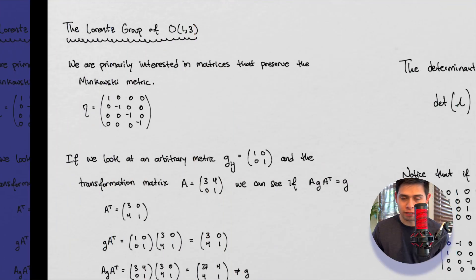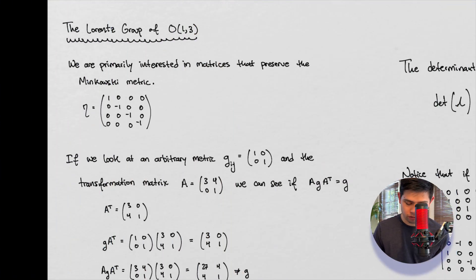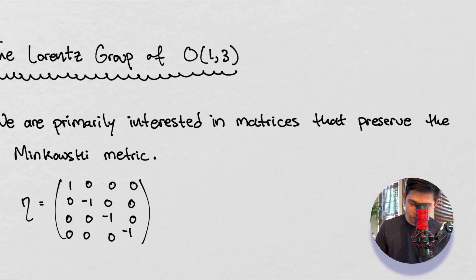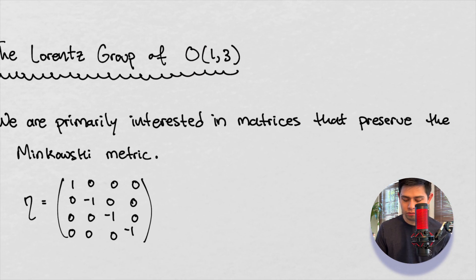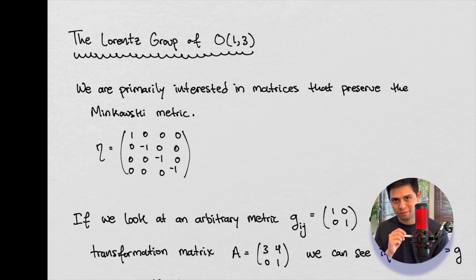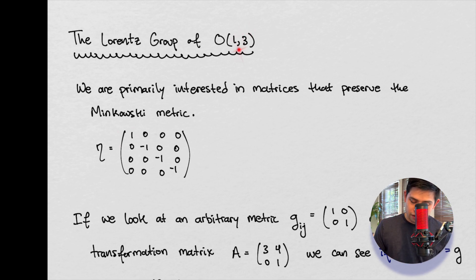So we are talking about the Lorentz group of O(1,3) today. Now, if this notation is new to you, when we're talking about 1, we're talking about the temporal part of our Minkowski metric. And when we're talking about 3, we're talking about the spatial parts.